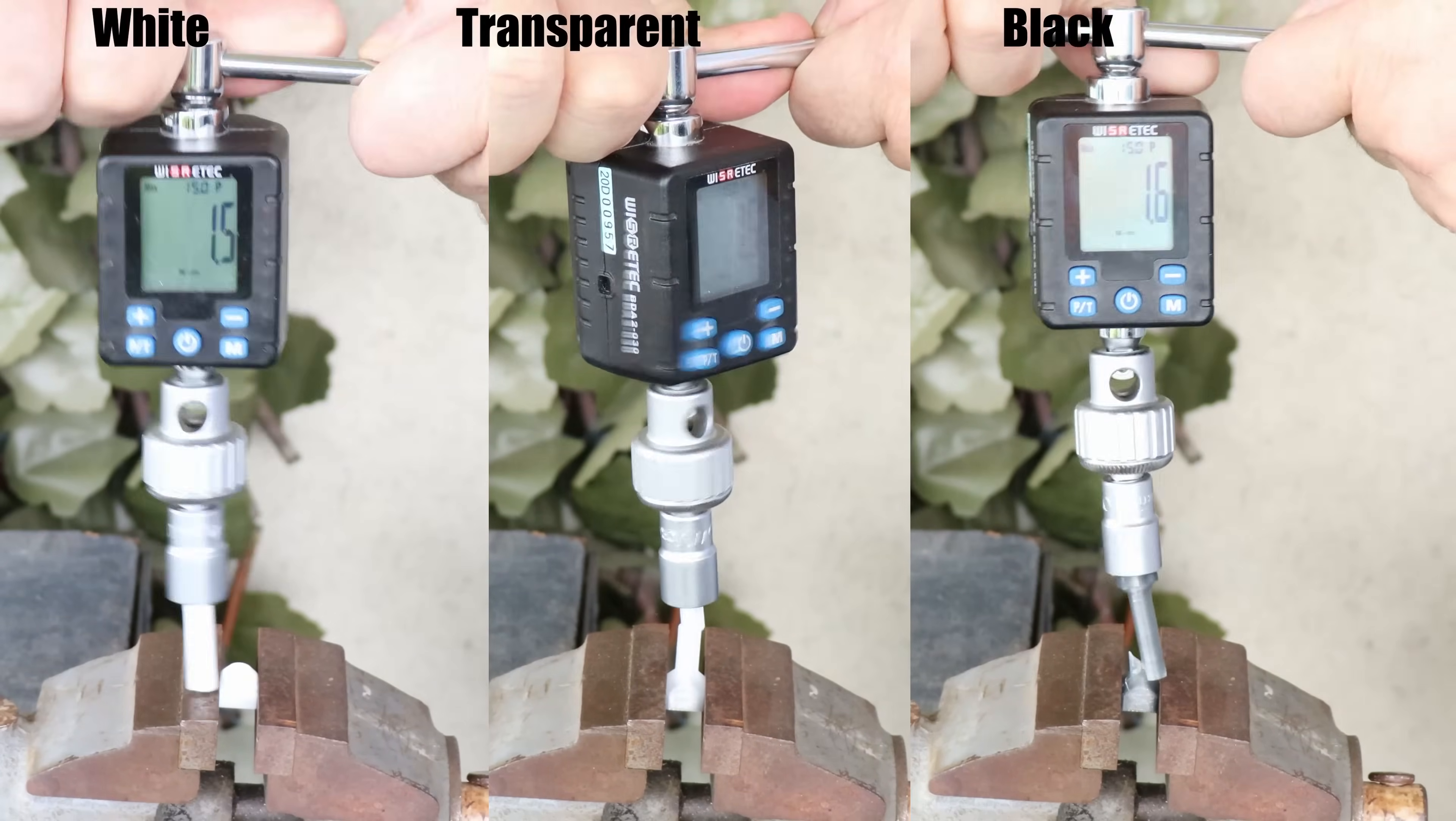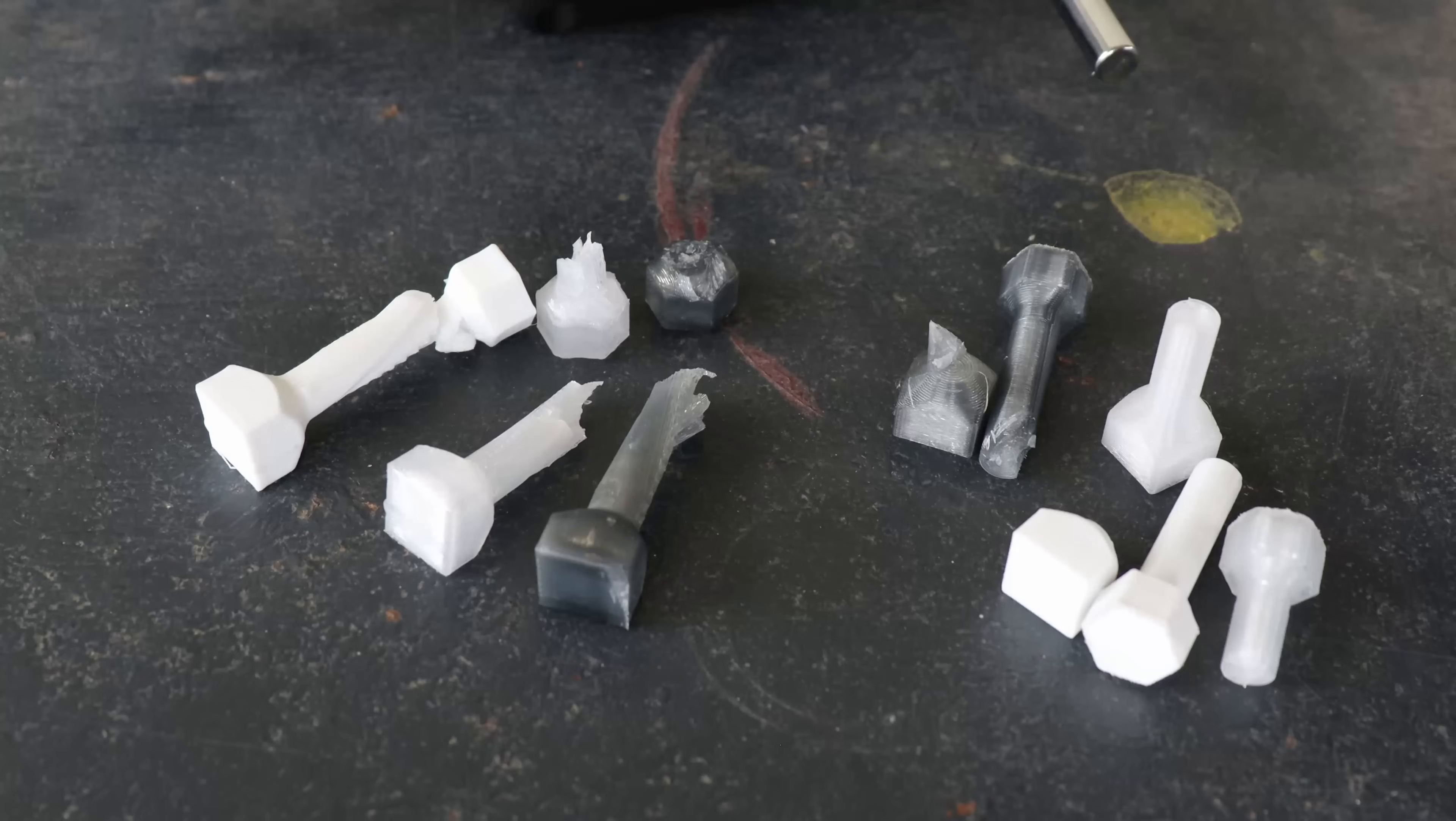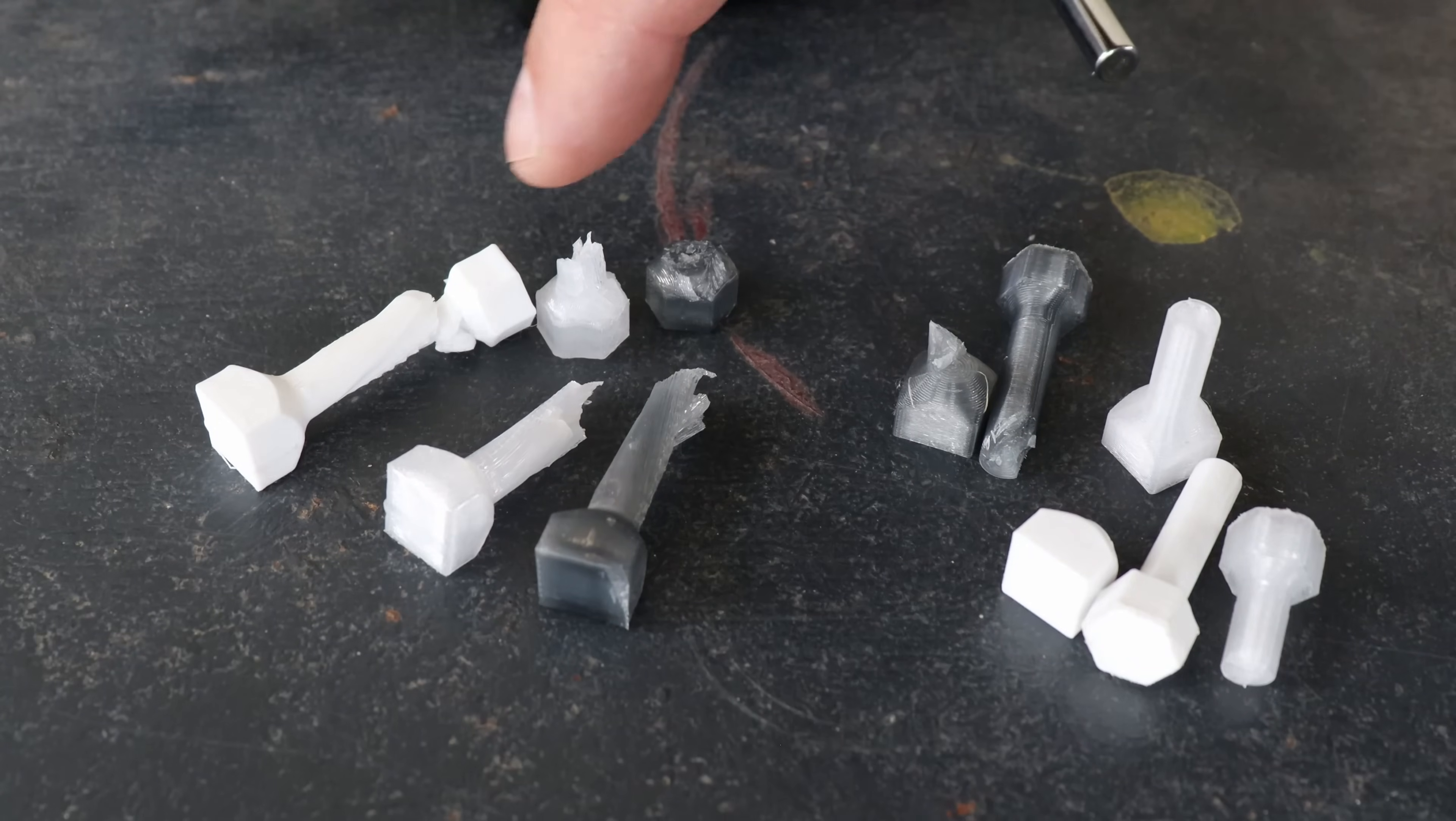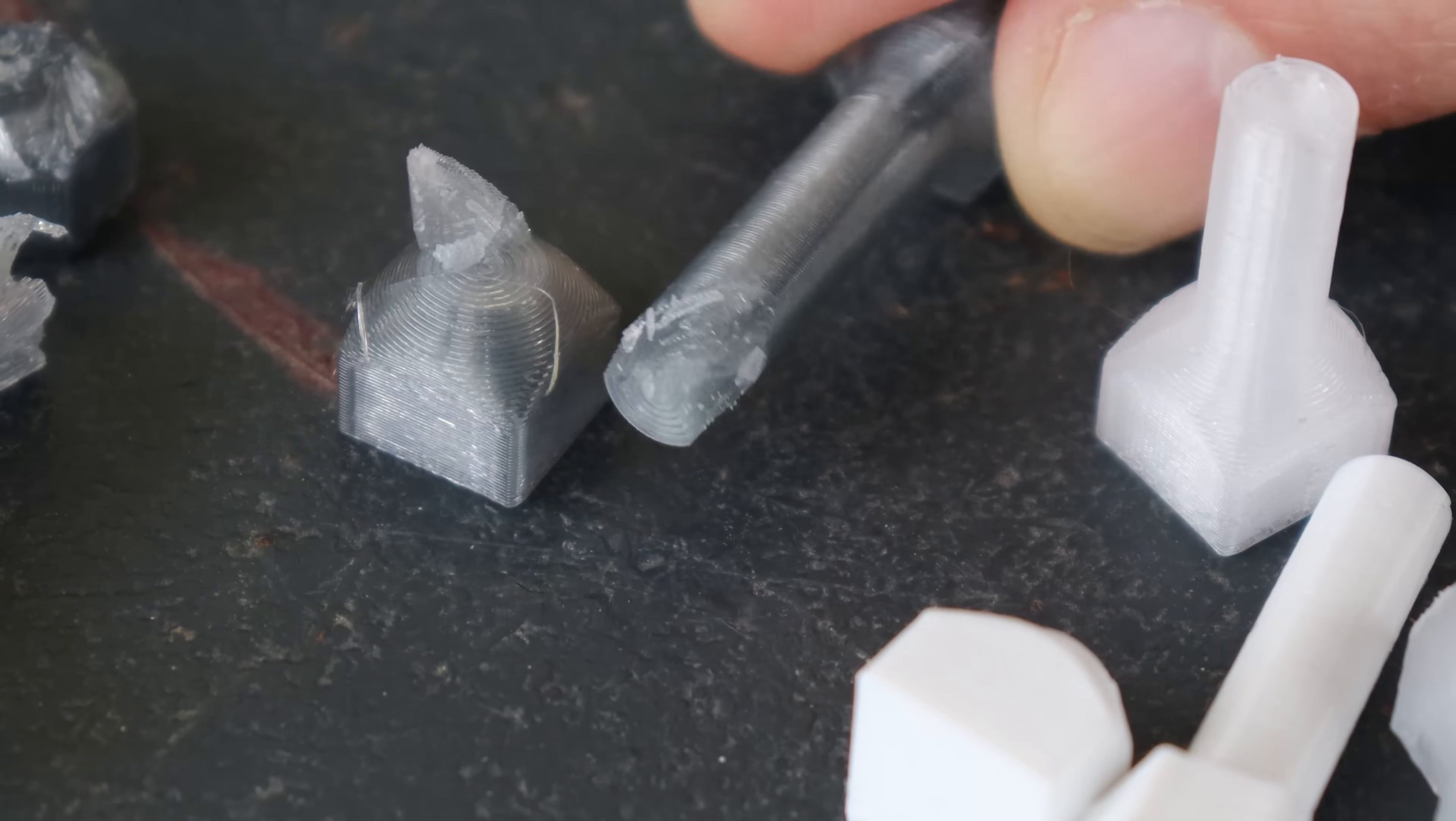And these are printed in vertical position and they break very suddenly. I never saw so big differences between the colors. And this type of the break is a sign of the great layer adhesion.